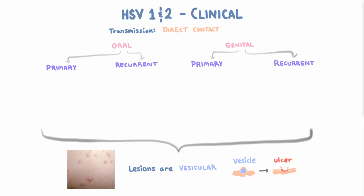Let's talk about each of the four scenarios. Starting with oral recurrent infection, because that's what most people are familiar with. This is often called herpes labialis, and it usually consists of a few vesicles on the lips that ulcerate — commonly called cold sores. They often occur at the corners of the mouth and can be quite painful.